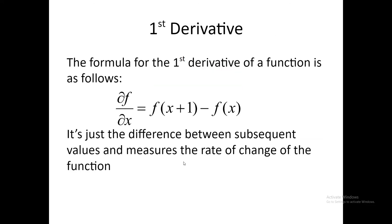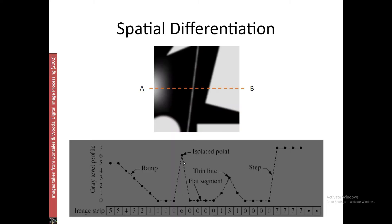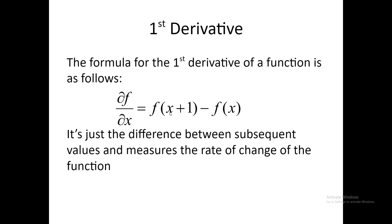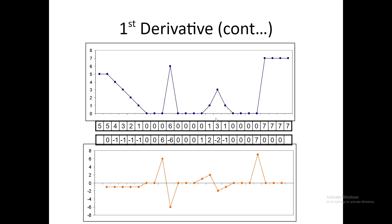Now let us find out the derivative for this entire range. If I am looking at the derivative in a single line it is f(x+1) minus f(x). For the first pixel it is going to be f(x+1) minus f(x), so that will be 5 minus 5 = 0. For the next pixel it is 4 minus 5 = -1. For this pixel 3 minus 4 = -1. Similarly, I will get the first derivative for all these values, and obviously you will not get any value for the first and last pixels.